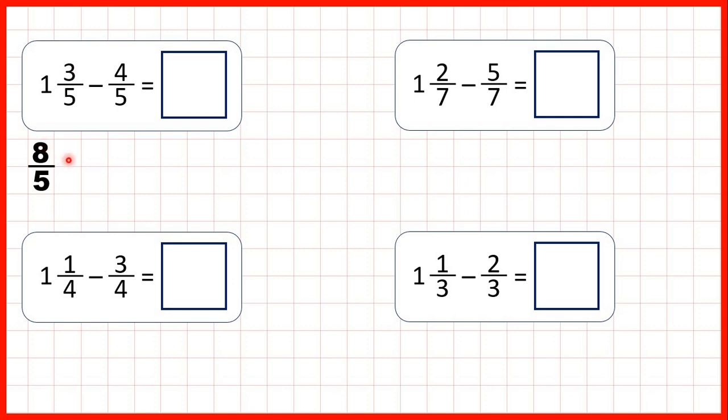So now we can subtract 4 fifths. Remember, when we subtract fractions, the denominator stays the same in our answer, and 8 minus 4 is 4. So our answer is 4 fifths.